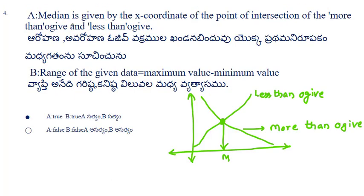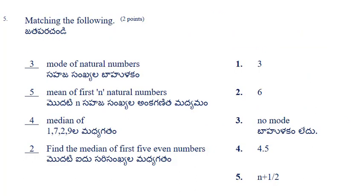The next problem has two statements. Statement A: the median is given by the x-coordinate of the point of intersection of the more-than ogive and less-than ogive — this is true, as discussed in the previous problem. Statement B: the range of the given data equals maximum value minus minimum value — this is the direct formula, so it is also true. Answer: A is true and B is true.